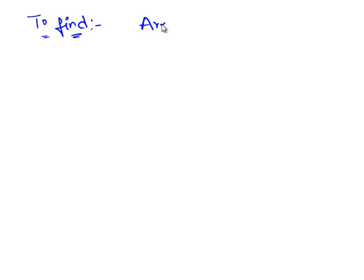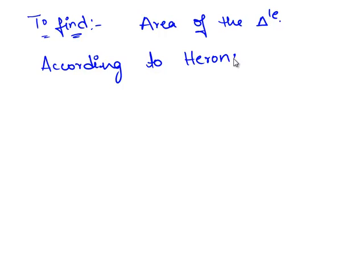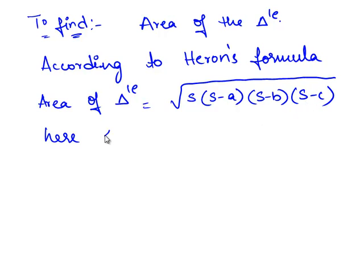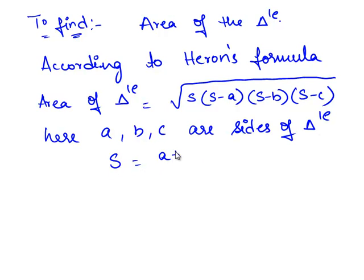Now we need to find the area of the triangle according to Heron's formula. The area of the triangle is equal to the square root of S times (S minus A) times (S minus B) times (S minus C), where A, B, C are the sides of the triangle, and S is the semi-perimeter, which is equal to A plus B plus C divided by 2.